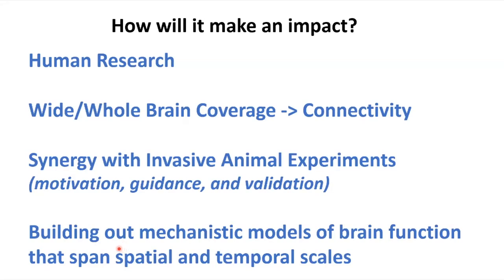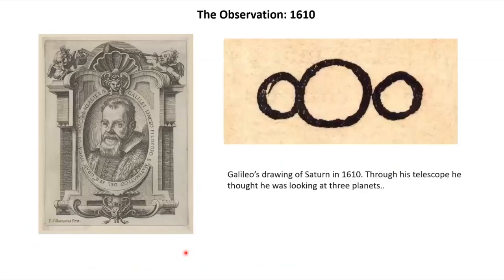A fourth area is building mechanistic models of brain function that span spatial and temporal scales — taking all the data from electrophysiology, calcium imaging, and other methods, and building out a multi-scale model of how areas are connected and how the brain is organized.